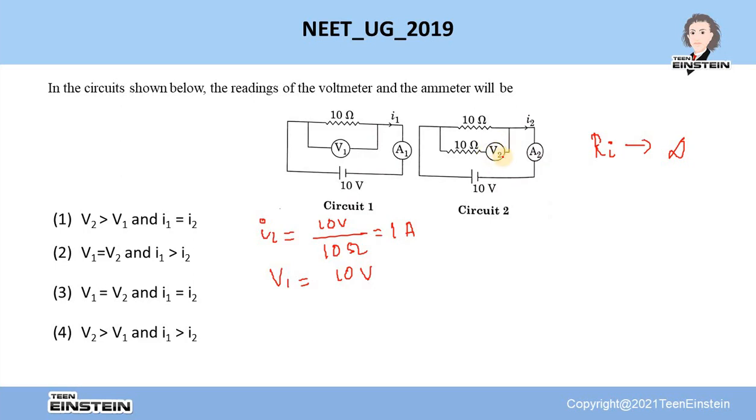But real voltmeter also, the internal resistance is to be very, very large. So even though there are two paths for the current here, no current will flow through this path. The whole current will flow through this 10 ohm alone. Therefore, you can actually neglect the presence of this 10 ohm resistance. And hence, both the circuits are the same.